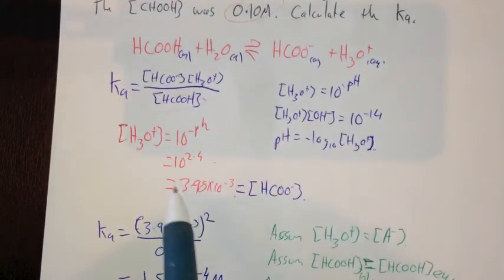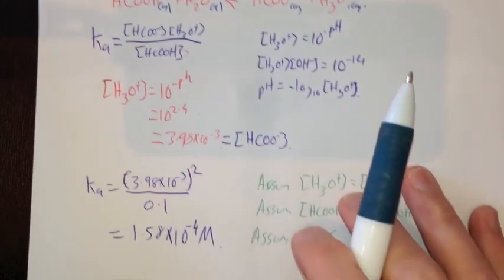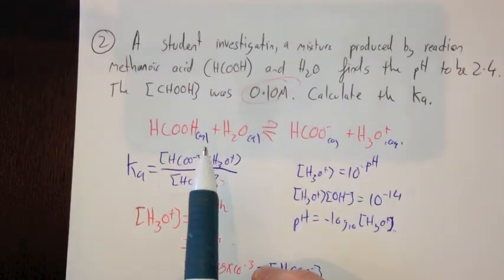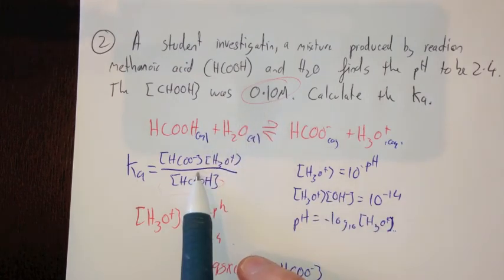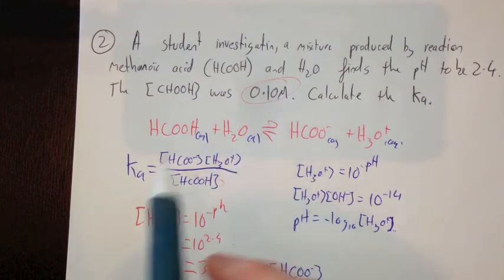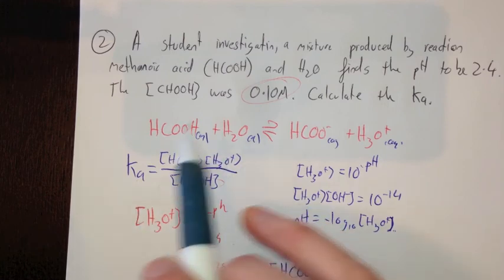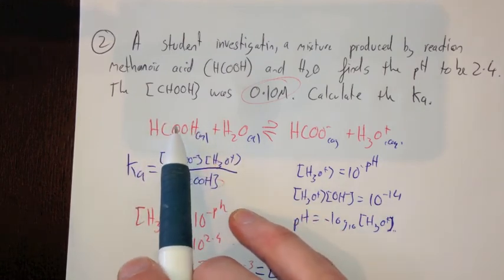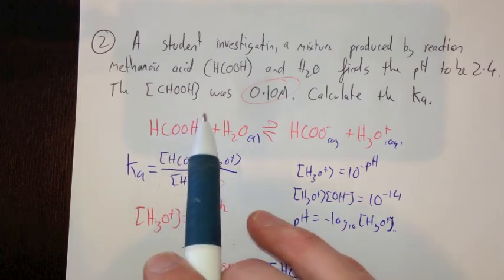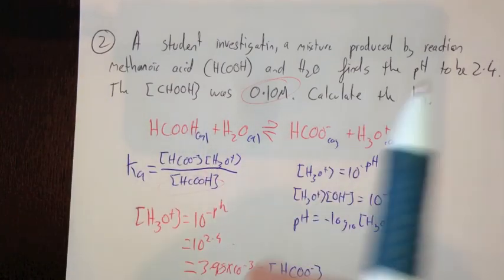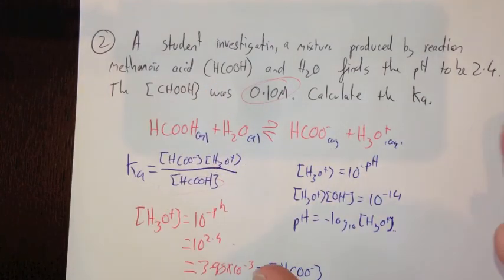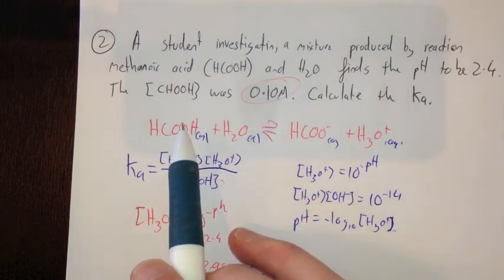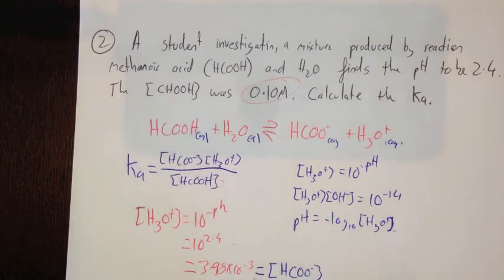And it's true, it only really partially ionizes. So that's why I can use my initial concentration for this part here. This is why this doesn't work with strong acids, because we can't assume that what we start off with is pretty much what we end up with as well. Because strong acid will completely dissociate, or almost completely dissociate. So with weak acids, we just assume that it only partially ionizes.